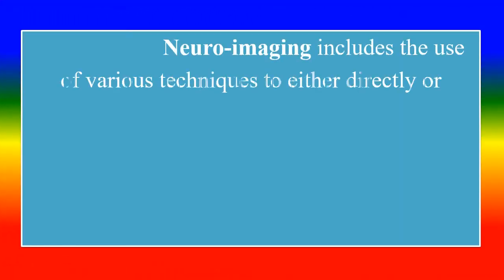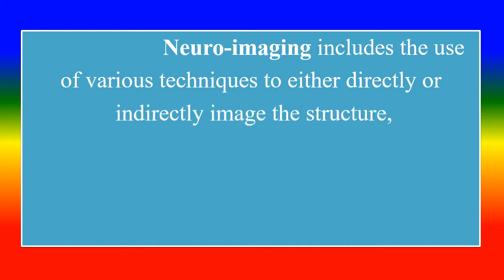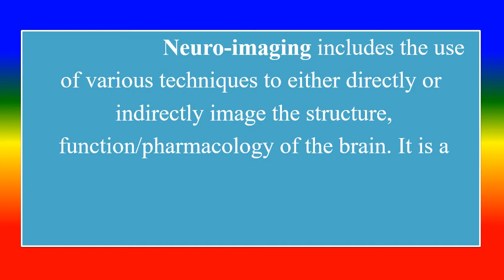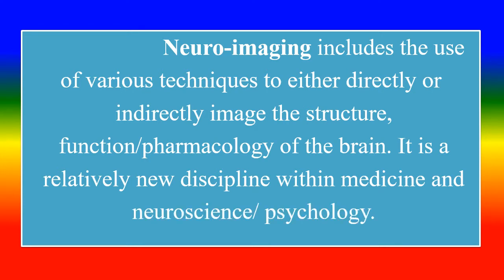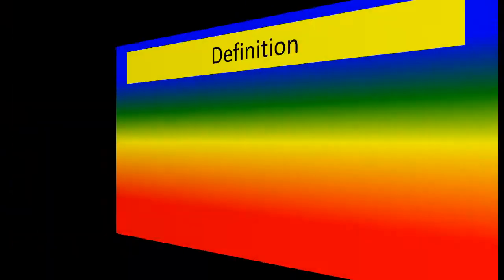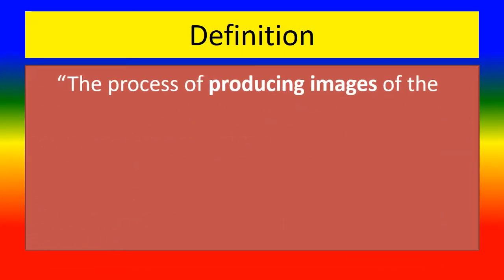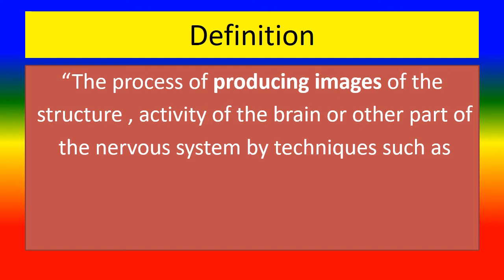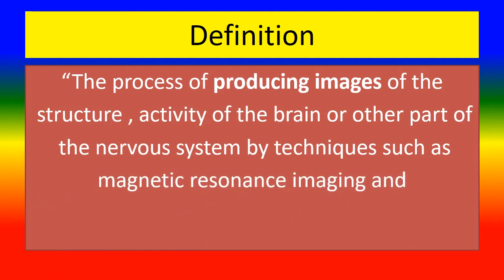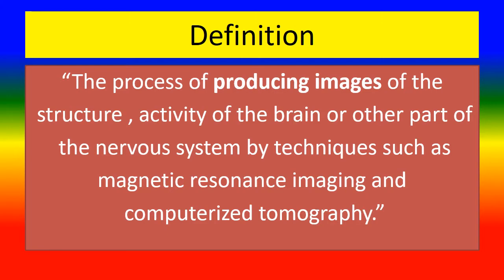Neuroimaging includes the use of various techniques to either directly or indirectly image the structure, functions, and pharmacology of the brain. It is a relatively new discipline within medicine, neuroscience, and psychology. Neuroimaging is defined as the process of producing images of the structure and activity of the brain or other parts of the nervous system by techniques such as Magnetic Resonance Imaging and Computerized Tomography.